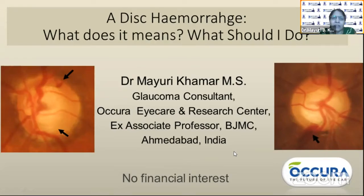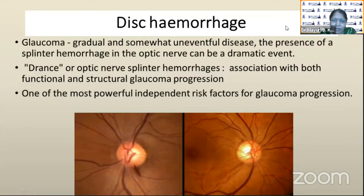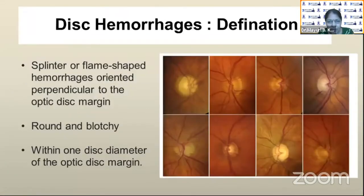I will be talking on disc hemorrhage — what does it mean and what should I do when I see one? Glaucoma is a gradually progressing and somewhat uneventful disease, and the presence of a splinter hemorrhage could be a dramatic event for us. Disc hemorrhage, or the optic disc splinter hemorrhage, is always associated with both functional and structural damage, and is one of the most powerful independent risk factors for glaucoma progression.